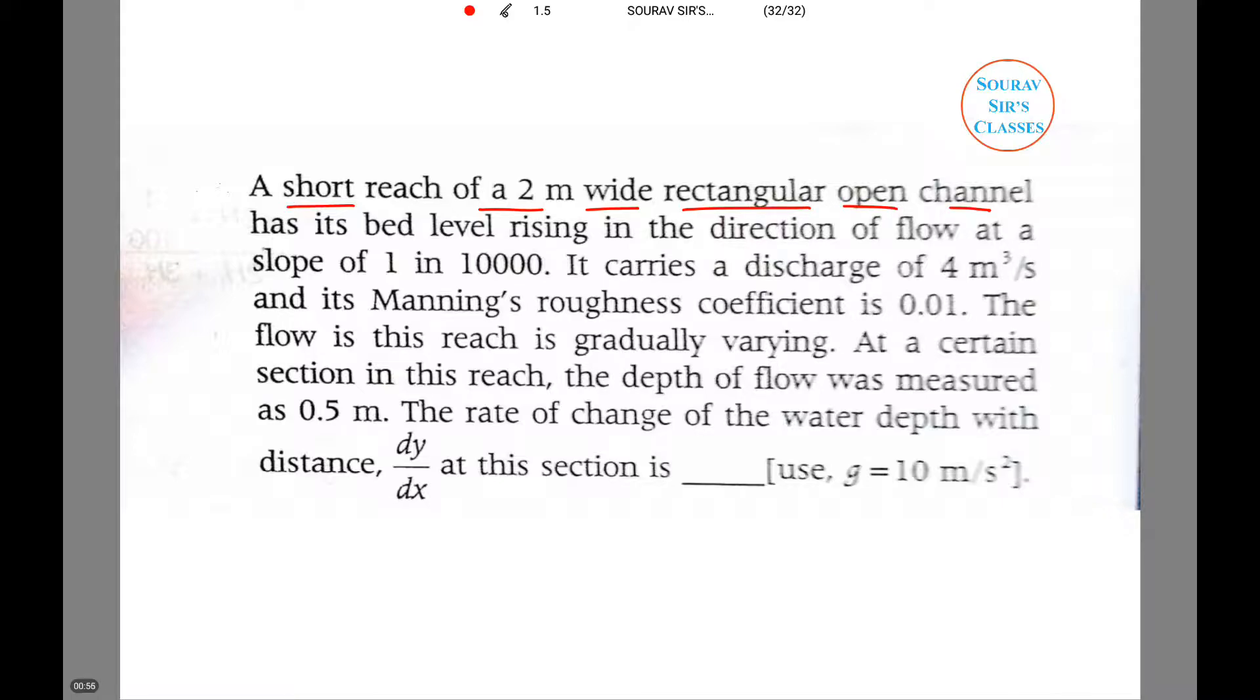...has its bed level rising in the direction of flow at a slope of 1 in 10000. It carries a discharge of 4 m³/s and its Manning's roughness coefficient is 0.01. The flow in this reach is gradually varying. At a certain section, the depth of flow was measured as 0.5 m. The rate of change of water depth with distance at this section is what we need to find out.